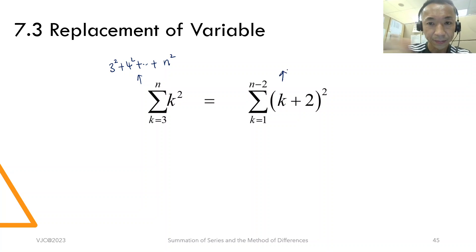If I write the right hand side, sub k equals 1 into this, you also get 3 square. Sub k equals 2, you get 4 square, all the way, if sub k equals n minus 2, you also get n square.